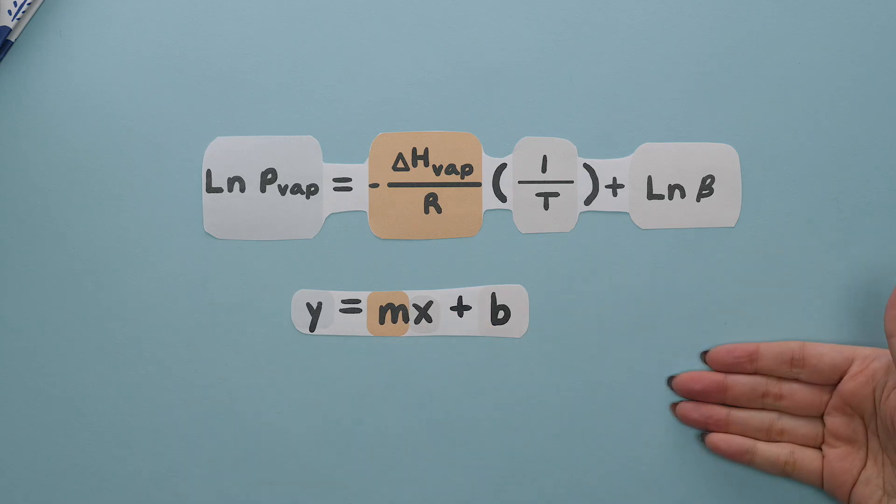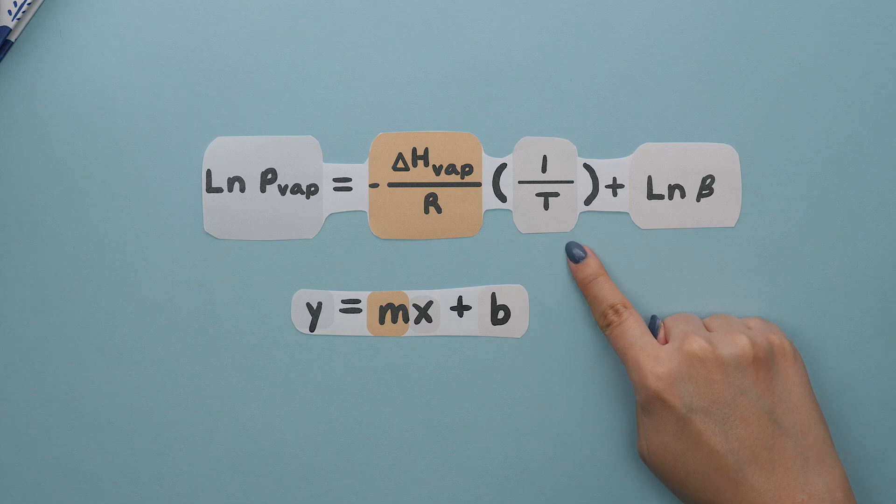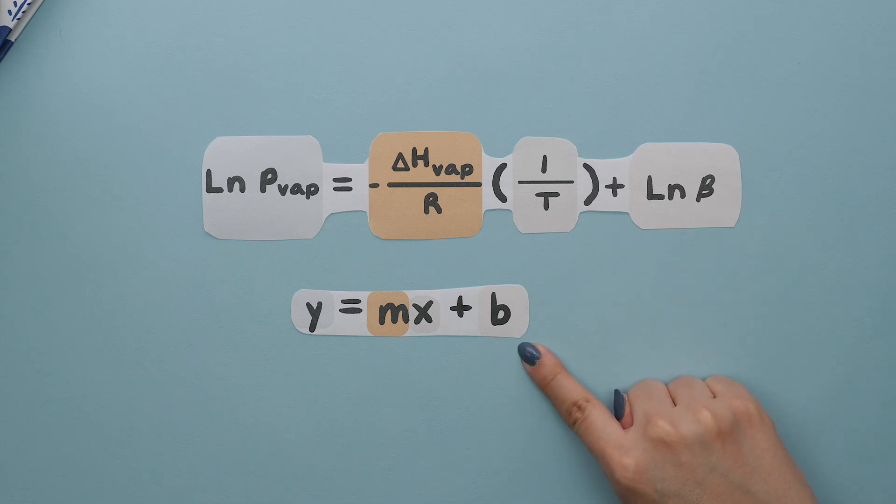There are some chemistry formulas that can be written to represent the equation of a line. Here's an example of this, where the ln of p is y, this portion is the slope, our x is what is in parentheses, and our y-intercept is this.